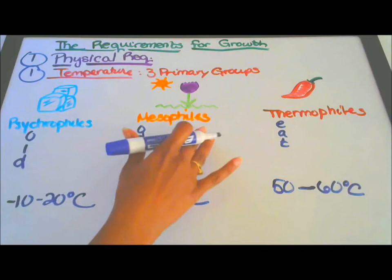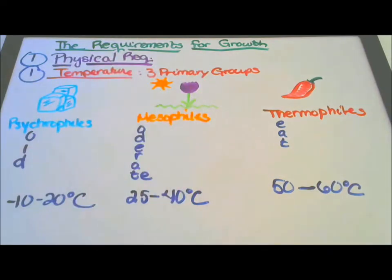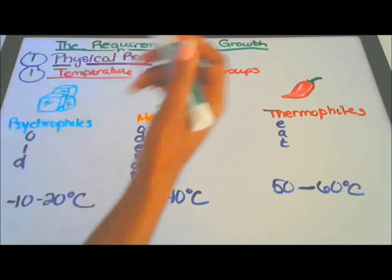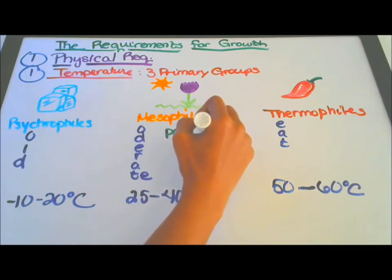Now, in the group mesophiles, pathogenic, let's use a different color. It's green. Pathogenic bacteria.